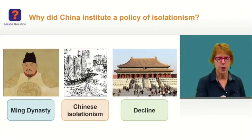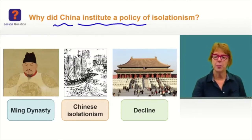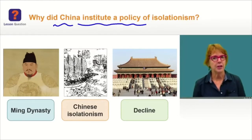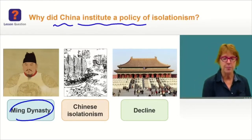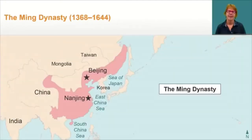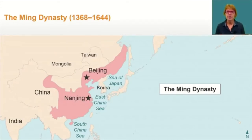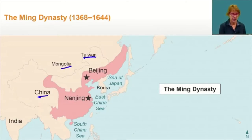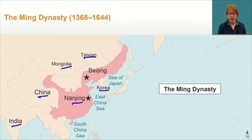Looking back at our lesson question — why did China institute a policy of isolationism? — we need to start by looking at the man who founded the Ming Dynasty. Let's take a look at the territory the Ming Dynasty covered. Be sure you understand that this is a vast territory, especially in relation to neighboring territories: Taiwan, Mongolia, China, India, and Korea. In fact, there were two capitals during the dynasty — Nanjing and Beijing — where the capital finally ended up moving permanently.